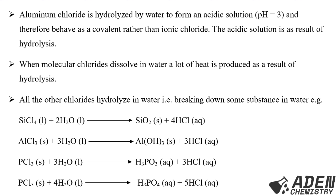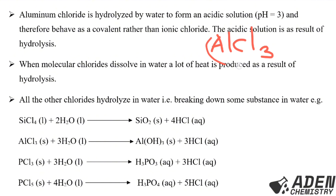Aluminium chloride is hydrolyzed by water to form an acidic solution with a pH of 3, and it therefore behaves as a covalent chloride rather than an ionic chloride. Although aluminium chloride is made up of aluminium (a metal) and chlorine (a non-metal), which would suggest ionic bonding, aluminium chloride is more covalent in character. The acidic solution is a result of hydrolysis, and a lot of heat is released when molecular chlorides dissolve in water.